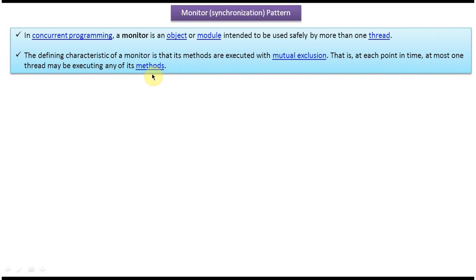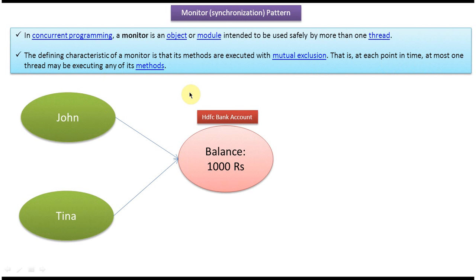We will see one example, and then we will come back and read those sentences again so you will understand them clearly. Here you can see an HDFC bank account, and in that HDFC bank account the balance is 1000 rupees. This HDFC bank account is shared by two people — one is John, another one is Tina. Tina is the wife of John, so this HDFC bank account is shared by both of them.